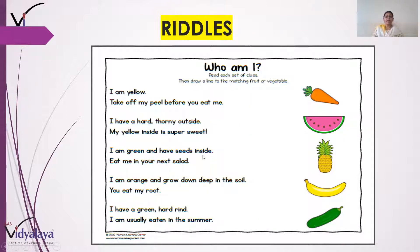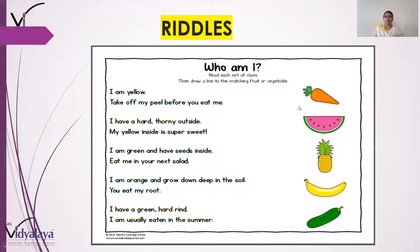I am green and have seeds inside — main hara hoon bahar se aur mere andar seeds hain yaani beej hain. Eat me in your next salad — aap mujhe apni agli salad mein kha sakte ho. Salad mein kya khaate ho isme se? Aap cucumber khaate ho na — isko kehte hain kheera, cucumber English mein kehte hain. I am orange and grow deep in the soil — main orange color ka hoon aur mitti mein andar ughta hoon. You eat my root — aur aap mera root khaate ho. Toh ye kaun hai root khaane wala? Yaani gajar!